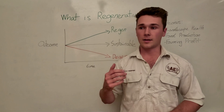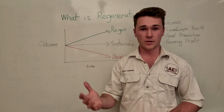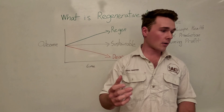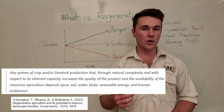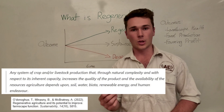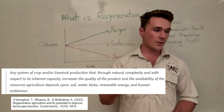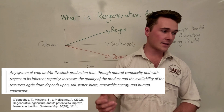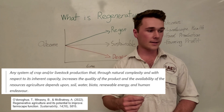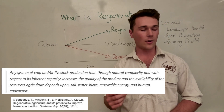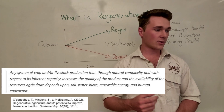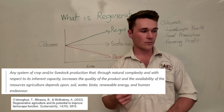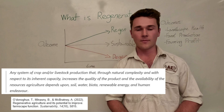As a starting point, my honours supervisor Tom Donahue defined regenerative agriculture as a system of crop and/or livestock production through natural complexity with respect to its inherent capacity that increases the quality of the product and the availability of the resources agriculture depends upon, such as water, soil, biota, renewable energy, and human endeavour.